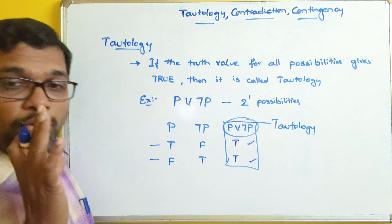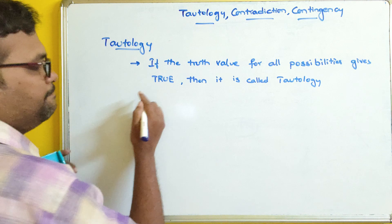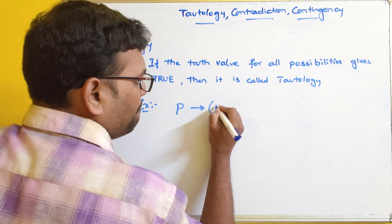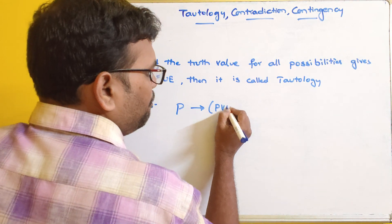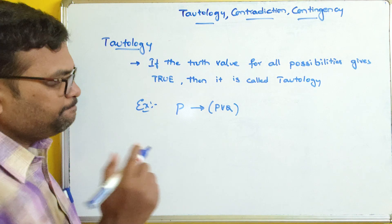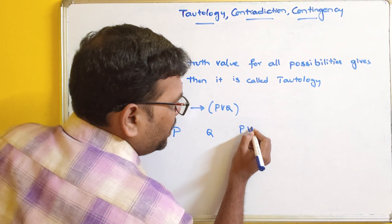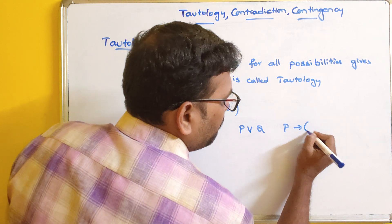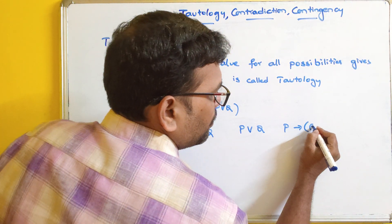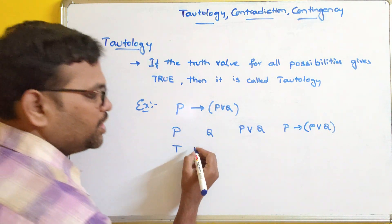One more example: P → (P ∨ Q). Now let us check with columns P, Q, P ∨ Q, and P → (P ∨ Q). There are four possibilities because we have two propositions.